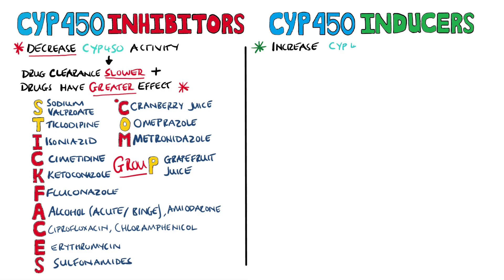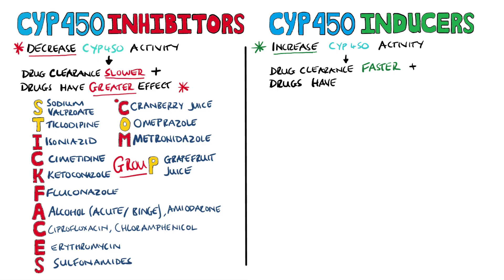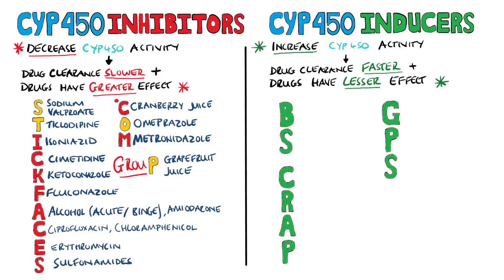Now let's do the inducers. These increase the activity of the cytochrome P450 enzymes, and so drugs that the patient is taking that are metabolized by cytochrome P450 enzymes will now get cleared faster and therefore be less effective than expected. BS Crap GPS is the mnemonic — to help you remember that these induce cytochrome P450 enzymes, think about how having a crap GPS would induce anger or rage.